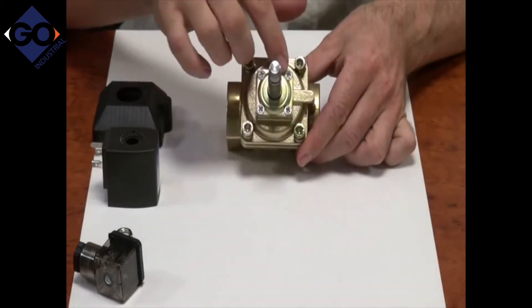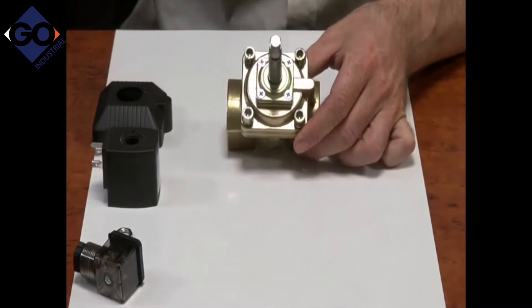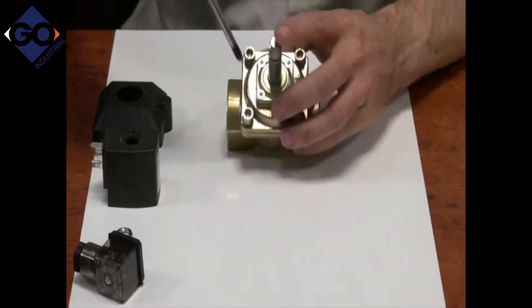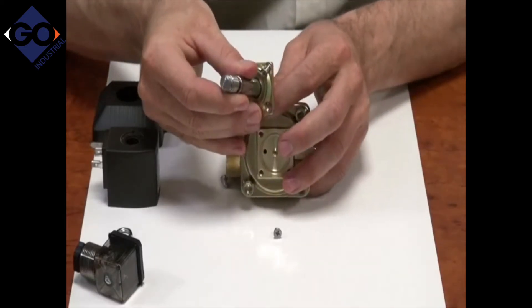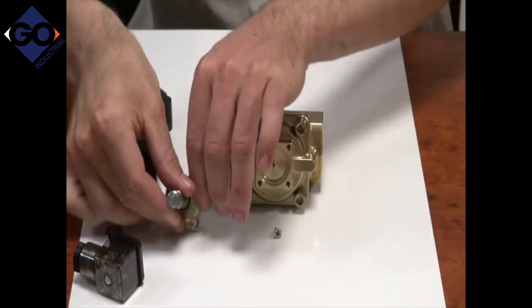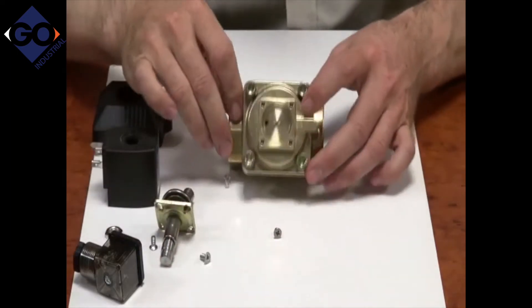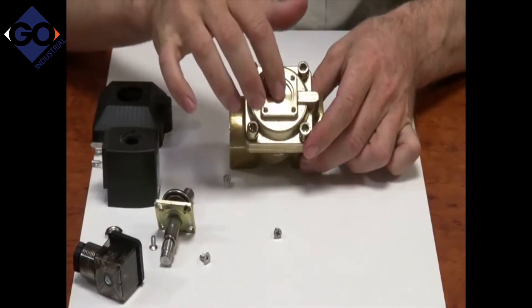Next we have this plate which holds the operator in place. I'll just loosen this off. So if we look at this valve, this is the machine, the jet.